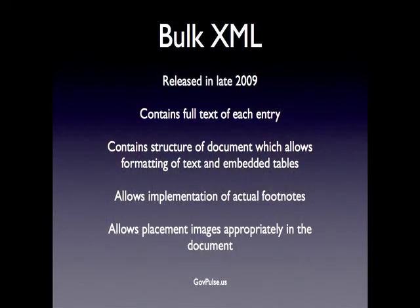The bulk XML was released in late 2009. We'll hear more from FedThread, which was among the first to take advantage of it. It contains the full text of each article along with markup of the structure and meaning, so you've got all the headers, tables, and indications of where images should be. With this, we were able to put the actual tables into the documents, link up the footnotes and have them work in a standard footnote way. We were then able to go through, take the official PDFs that the GPO provided, pull them apart, pull the images out, and insert them back into the HTML versions. So you now have an HTML version of a Federal Register article that has all the information the PDF has but in a more easy-to-use format.